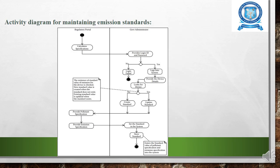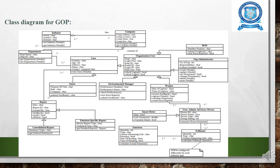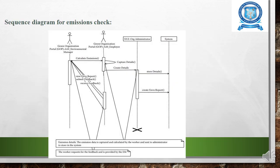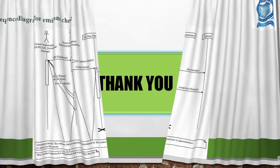The activity diagram for maintaining carbon standards involves login with ID and password, providing device details, creating a standard, updating the standard, and setting the standard score. The sequence diagram for the green organization shows the organization administrator and system calculating emissions, capturing details, creating details, storing details, and creating the environmental report.